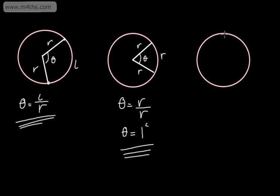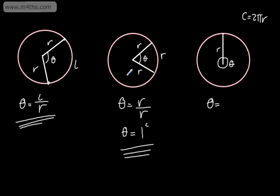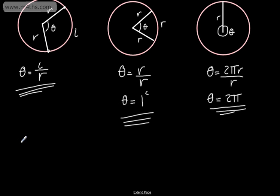What I'm now going to do is look at the relationship between radians and degrees. This is a circle — that's going to be the centre. This time I'm going to consider the angle for one complete revolution, which is 360 degrees. The arc length in this case is going to be the circumference of a circle. We know the circumference is 2πR. So we can say that theta equals the arc length for one complete revolution, which is 2πR, divided by the radius R, which gives us theta equal to 2π radians. So one complete revolution is 2π, and we can say that 360 degrees is equal to 2π radians.